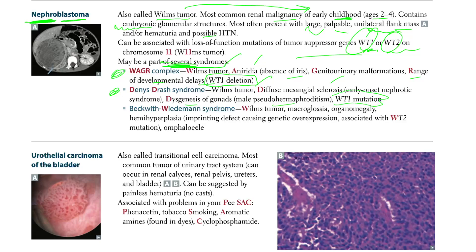Denis-Drash syndrome is also associated with a WT1 mutation. Then there is Beckwith-Wiedemann syndrome, which includes Wilms tumor, macroglossia, organomegaly, and hemihyperplasia. This is an imprinting defect causing genetic overexpression and is associated with a WT2 mutation.